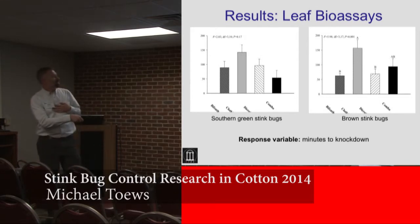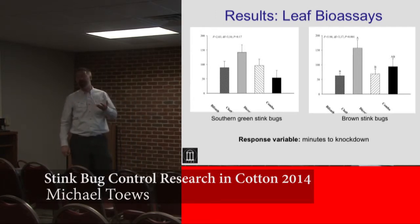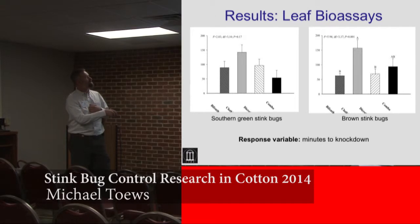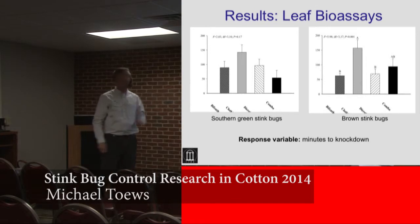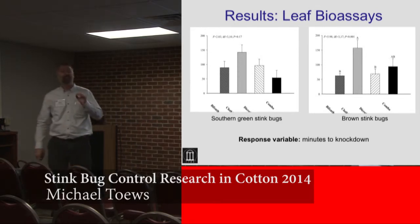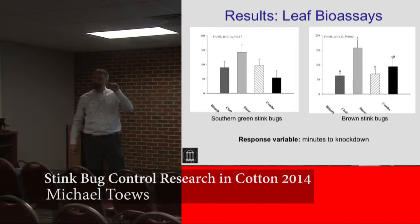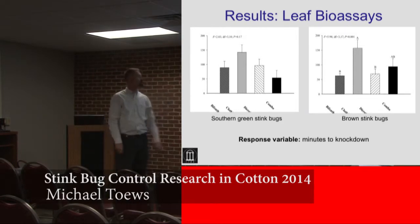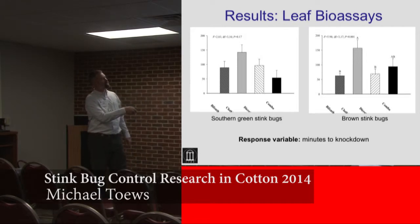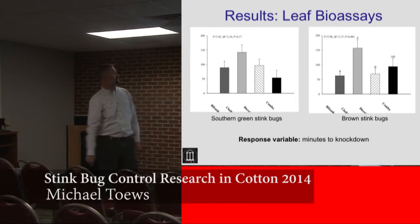These are the leaf bioassay results. On the left with southern green stink bugs, this is minutes to knockdown — about 90 minutes with bifenthrin, which tends to be one of the faster-acting compounds. Clothianidin, the neonicotinoid, bumps up to about 140 minutes. The combination product gave a pretty rapid knockdown. For browns, which I put more stock into because the brown stink bug is more difficult to control: bifenthrin gives a quick knockdown at about an hour from exposure to dry residues until they flip upside down. Dicrotophos is very similar. The combination falls somewhere between the two, and clothianidin is the longest at about two and a half hours. Dicrotophos is generally viewed as one of our more effective compounds for control of brown stink bugs.